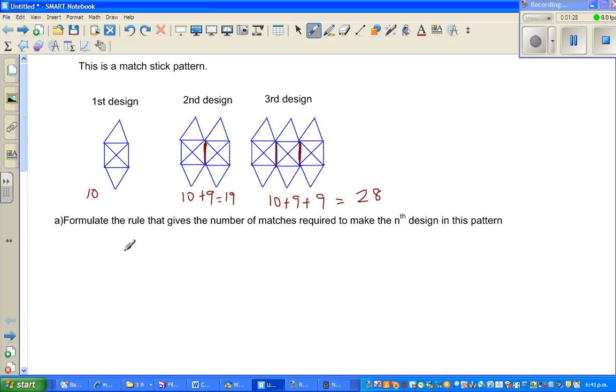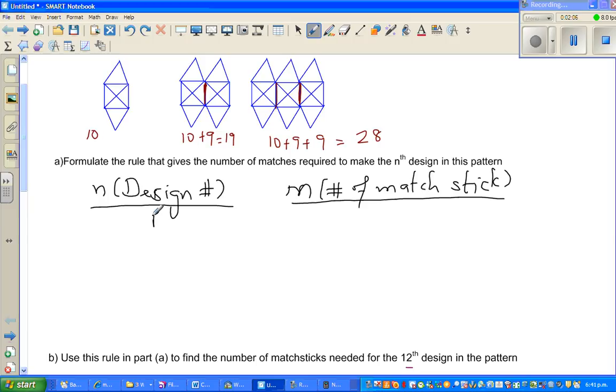Let's make up a table from this pattern. It's good to make a table. This leads to the table. n is the design number, we denote the letter n for the design number. And let's say m for the number of matchsticks. Making up a table from a number sequence is leading me to a table. In the first design, you have 10 matchsticks. In the second design, I have 19. In the third, I have 28.